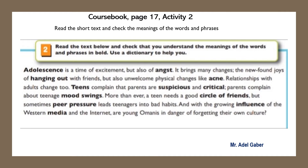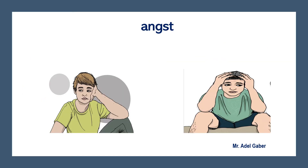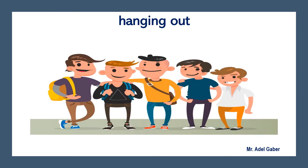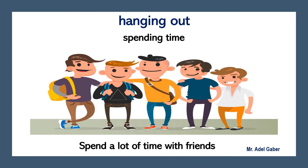Activity 2 in your course book page 17: read this short text and check the meanings of the words and phrases. Now stop this video and take your time — read and use your dictionary to help you. What is the meaning of 'angst'? It is a strong feeling of unhappiness and worry. 'Hanging out' means spending a lot of time with friends.